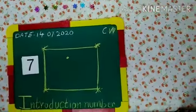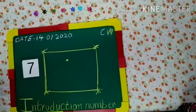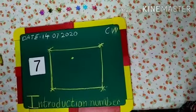So, let's start to understand the formation of number 7. How to make number 7?